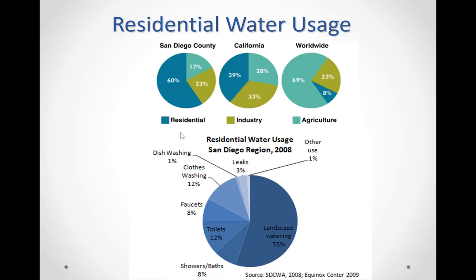This graph shows residential water usage around the globe, in the state of California, and in San Diego County. Around the globe, agriculture is the major consumer of water. For the state of California, it is more or less evenly distributed — about 30 to 40 percent each between agriculture, industry, and residential use.